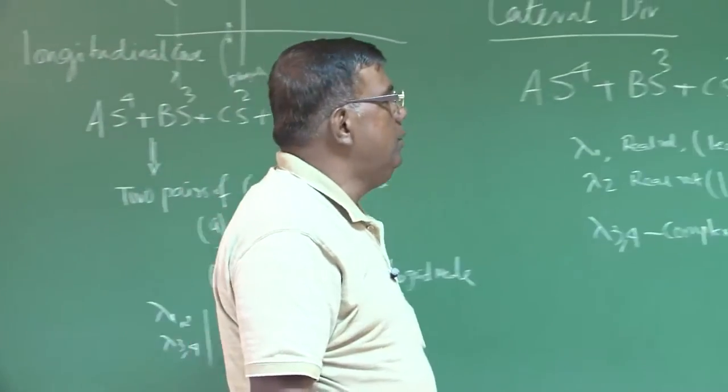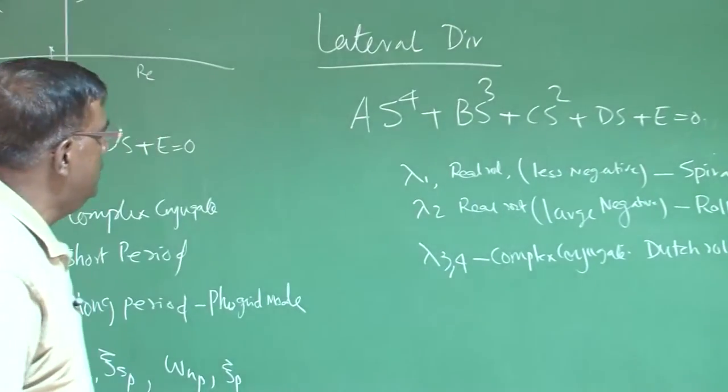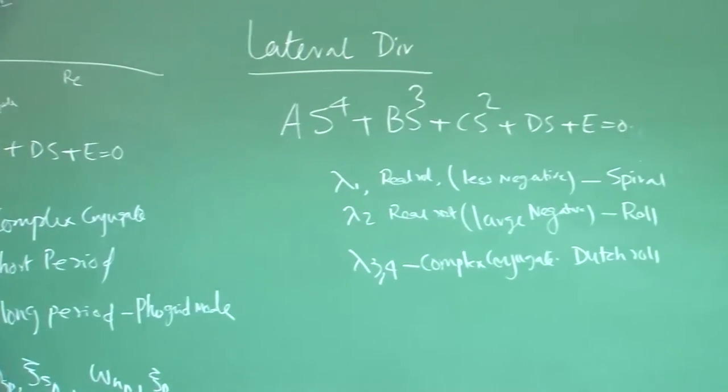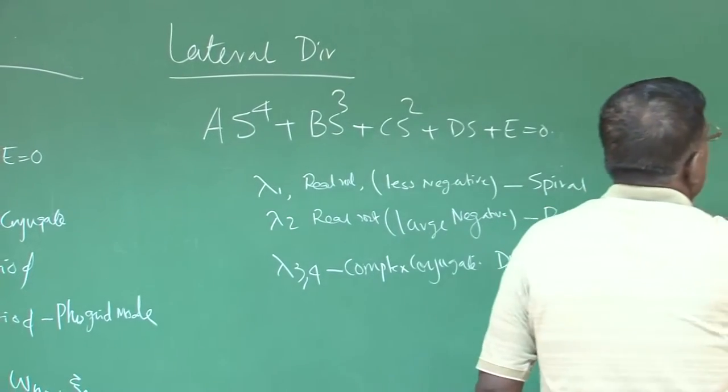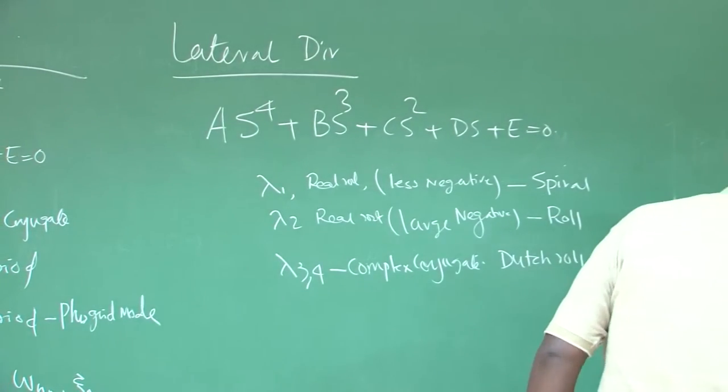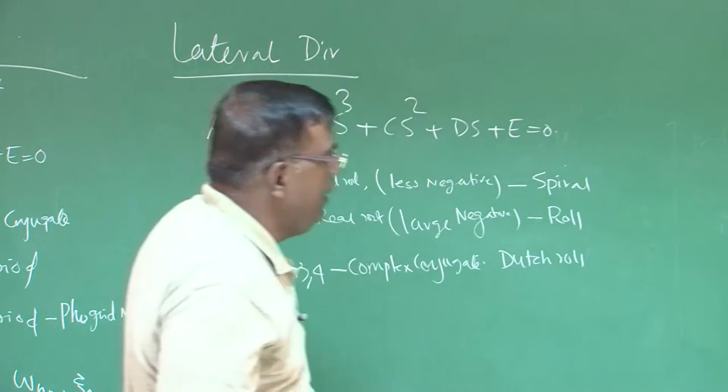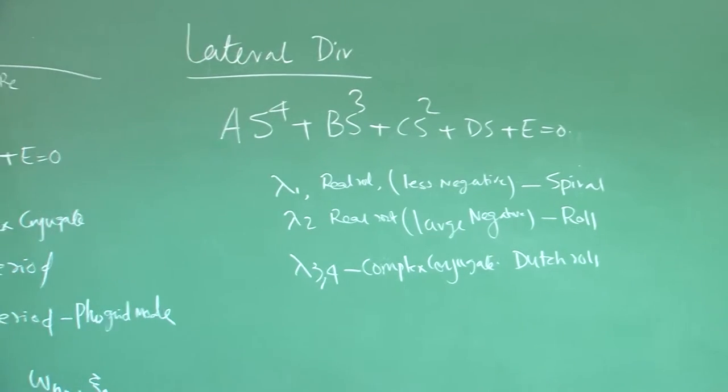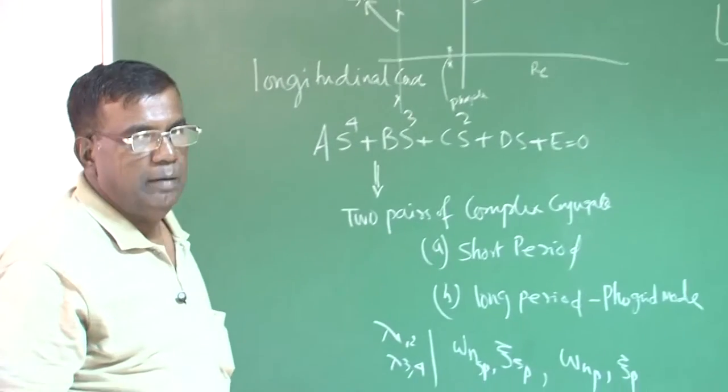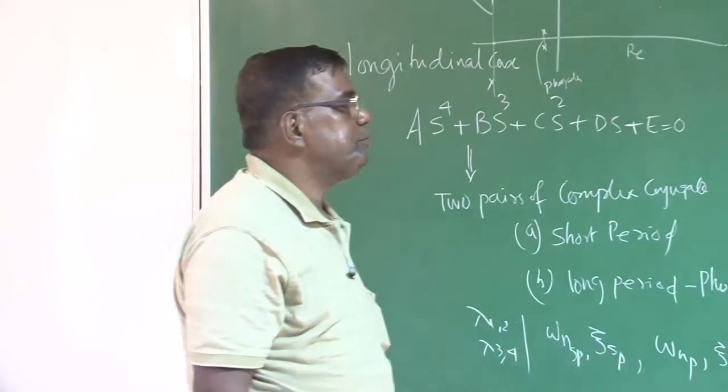And we also know how to control their natural frequencies or damping ratio, because as long as you know the roots, if it is a complex pair, you know how to find natural frequency and damping ratio, if you are real, you talk in terms of time to half or time to double, right, the amplitude.